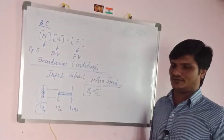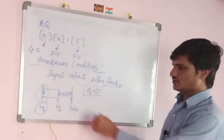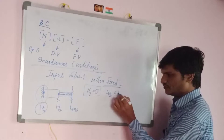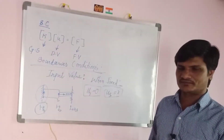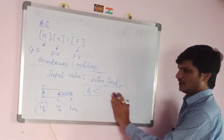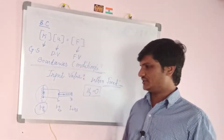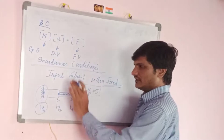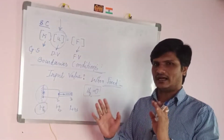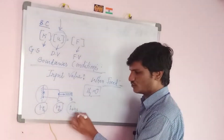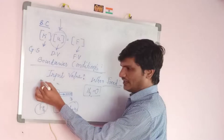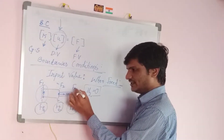If the other end is also fixed, then u3 also becomes zero. Now, removing the fixed condition at node 3, only u1 = 0 applies. This means u2 and u3 are the unknown displacements to be calculated. For the force vector, at node 1 you have f1, at node 2 you have f2, and at node 3 you have f3.